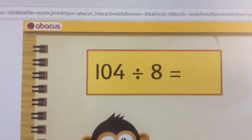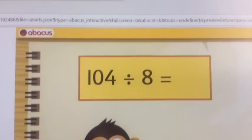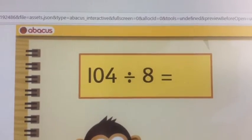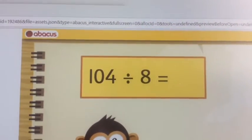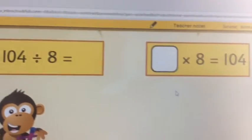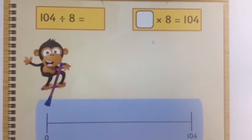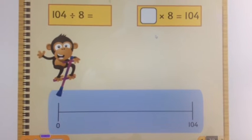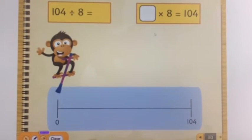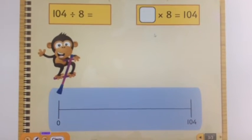Draw another empty number line on your square paper and try this one. How would Chunky Chimp use this multiplication sum on the empty number line to solve the division sum? Give it a go.